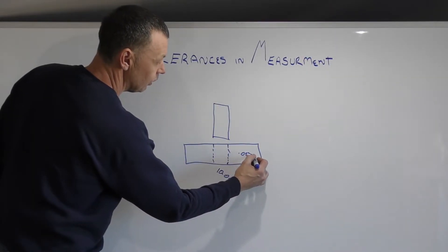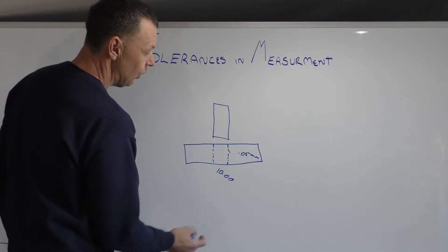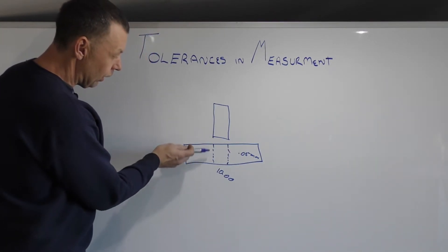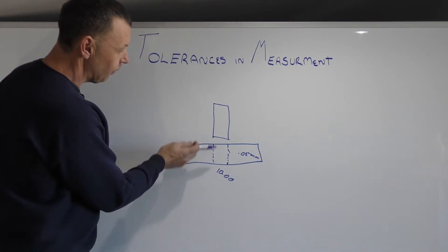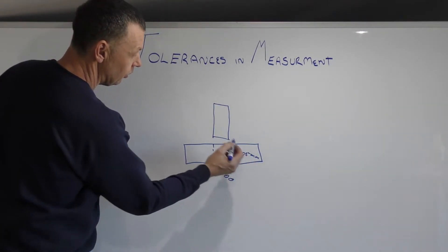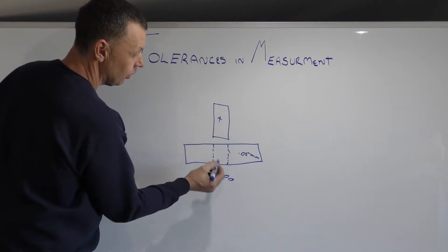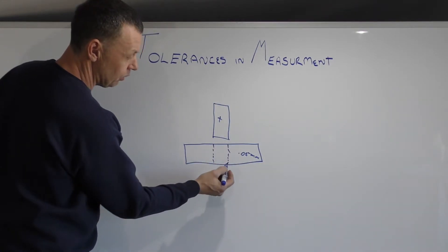0.05 millimeters. That means that whatever this hole finishes at, this part has to be plus 0.05 millimeters bigger than the hole.